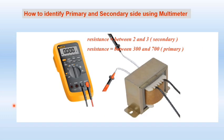We can also identify the primary and secondary winding of a transformer using a multimeter. If we have only two wires on both sides, connect your red and black probes to the two wires and set your multimeter to resistance mode. Check the resistance between the two wires. If the resistance is between 300 to 700 ohms, it is the primary winding. If the resistance is between 2 and 3 ohms, it is the secondary winding.